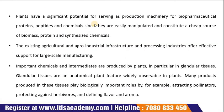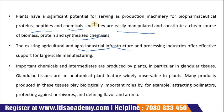Plants have significant potential for serving as production machinery for biopharmaceutical proteins, peptides and chemicals, since they are easily manipulated and constitute a chief source of biomass, protein and synthesized chemicals. The expected rise in demand for biopharmaceuticals recommends increased attention to the study of plant genetics and metabolism, the construction of genetic recovery and purification of chemicals, biopharmaceuticals, and intermediate metabolites from plant sources. Existing agriculture and agro-industry processing industries offer effective support for large-scale manufacturing, and these plants are a potentially cheap source for biopharmaceuticals.